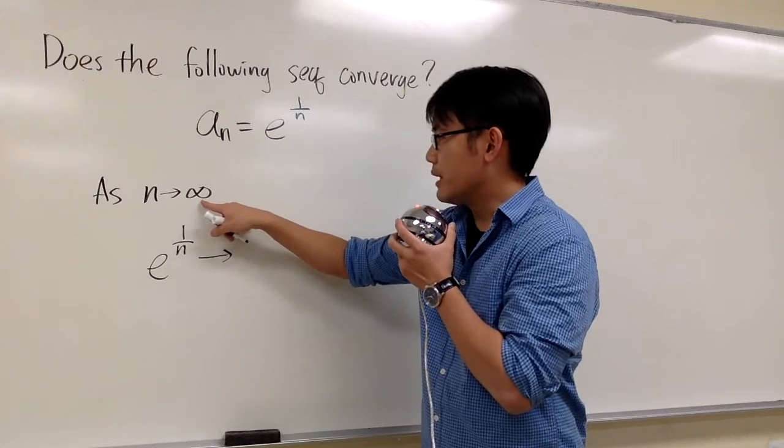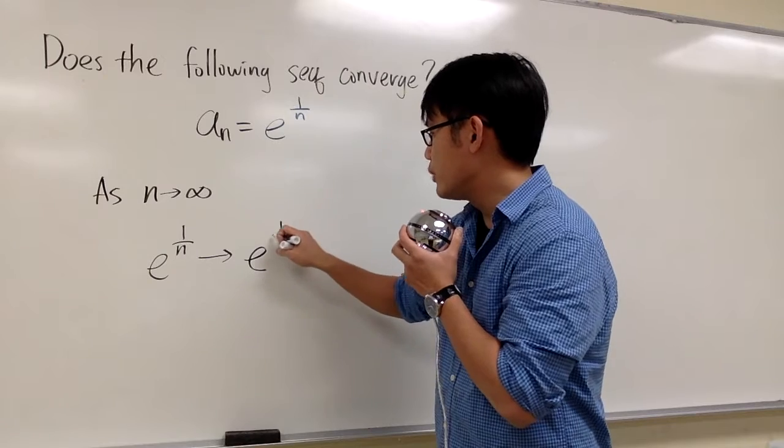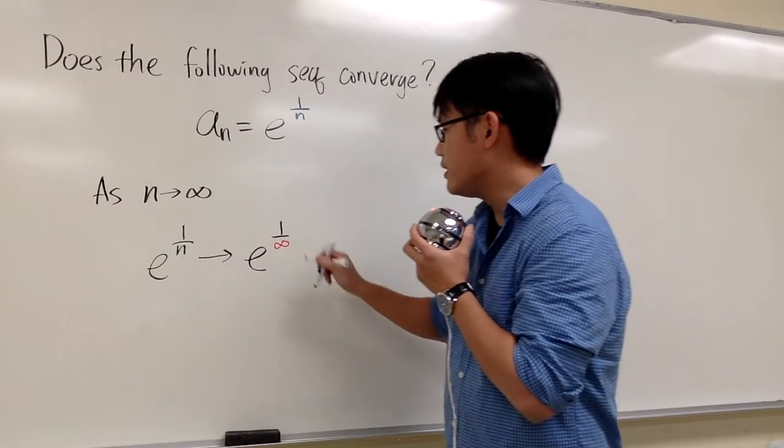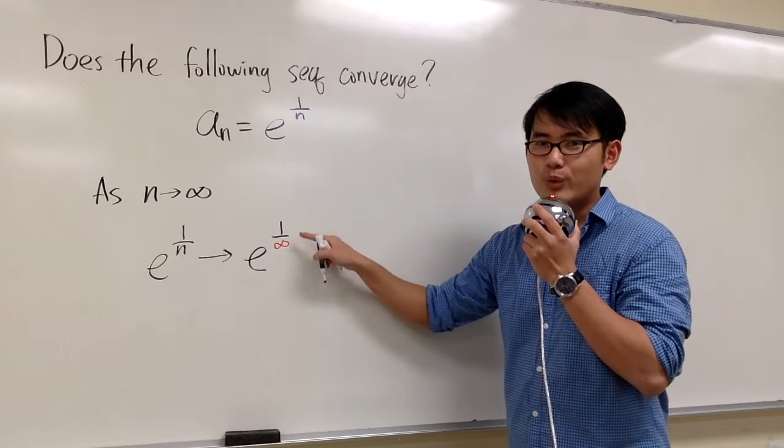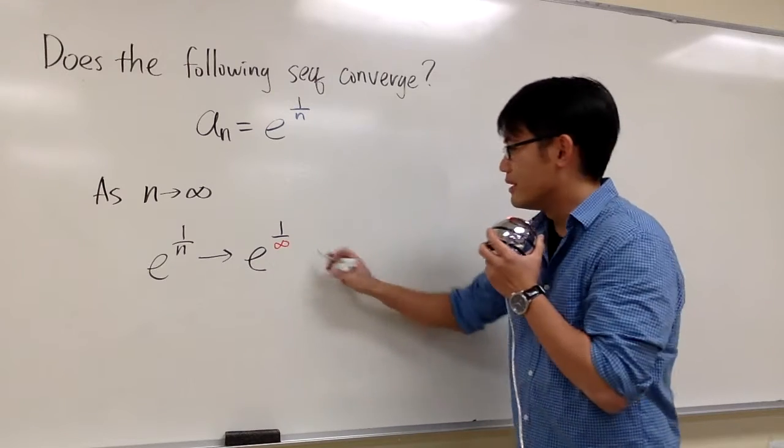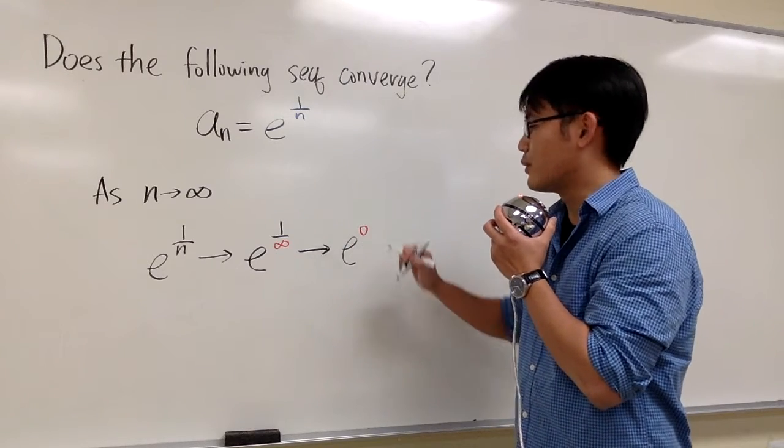So what we can do is plug in infinity to n to see what happens. It will look like we have e raised to the 1 over infinity. 1 over infinity is something that we can draw a conclusion. 1 over infinity is 0. So we can say this approaches e to the 0's power.